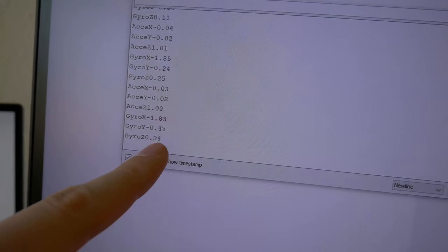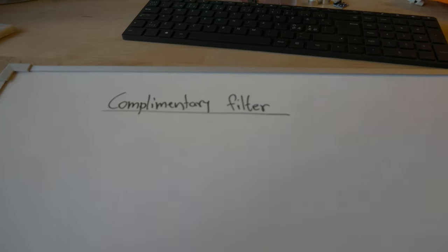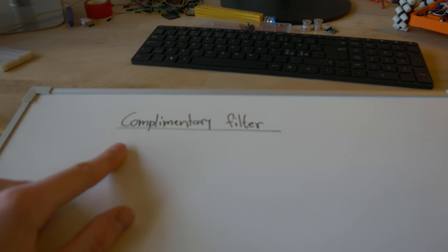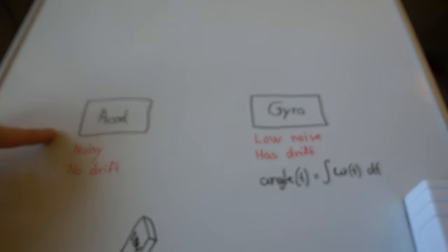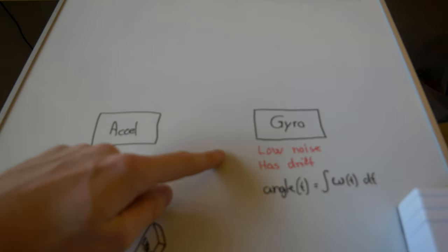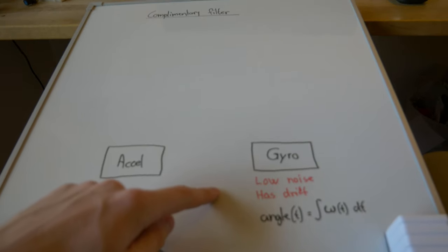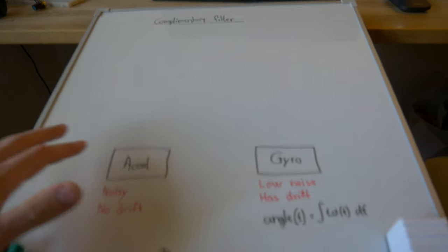I've come across something called the complementary filter which is a way that you can combine your accelerometer data with your gyroscope data to get a better estimate of your vehicle's orientation. So let's take a look.